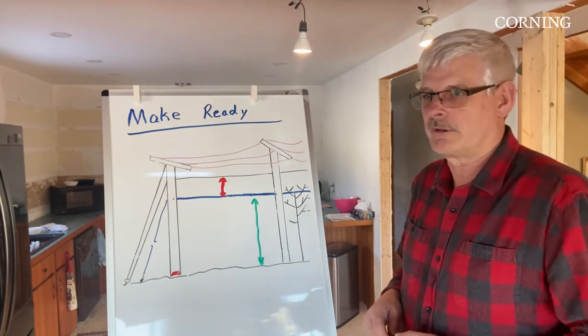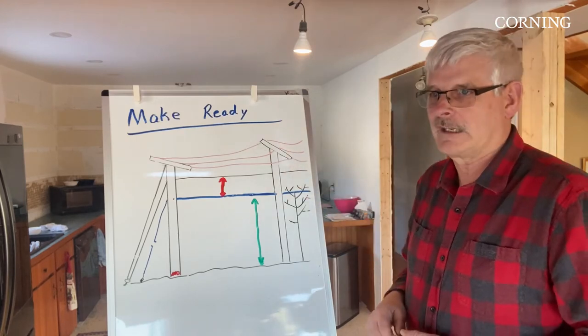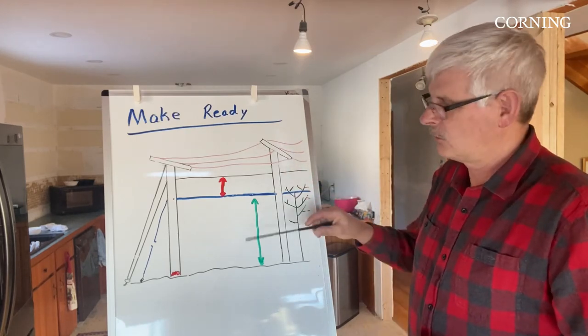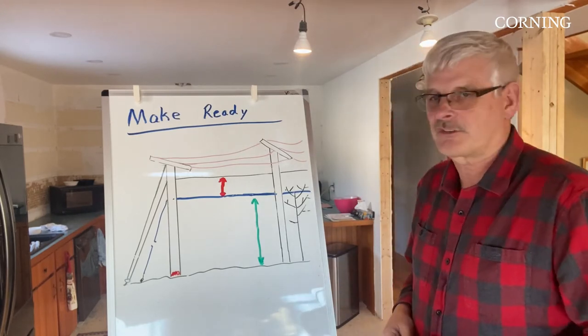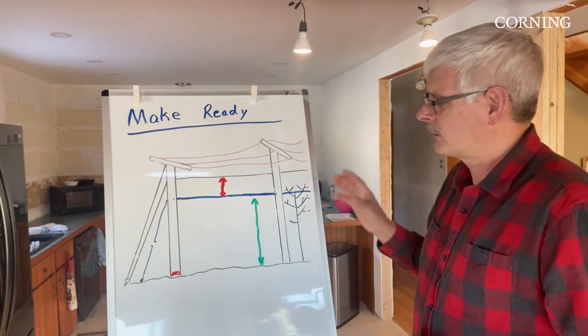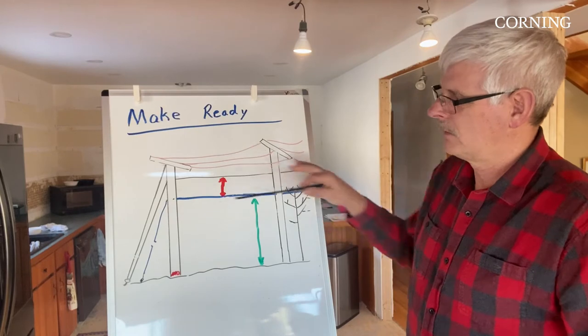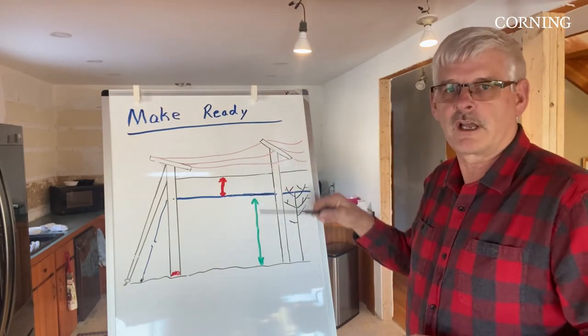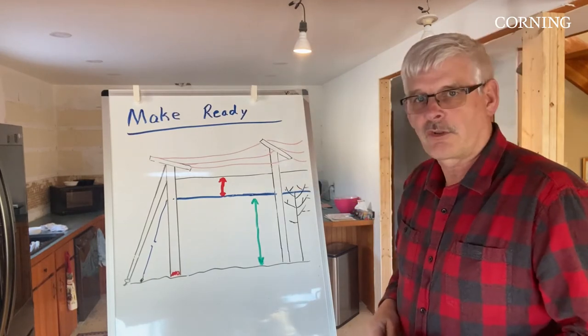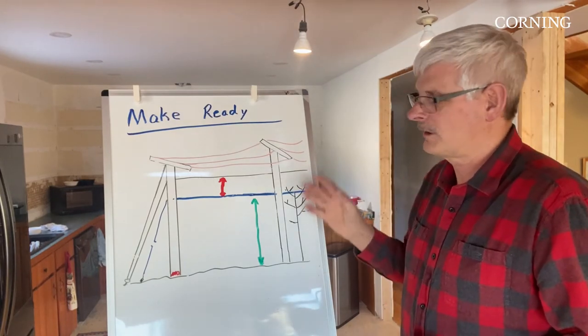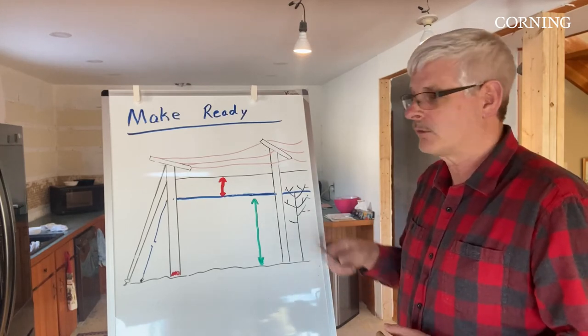They're trying to determine based on requirements whether the existing pole line can be made ready to accept a new attachment. Once they receive your application, they start looking at the overall pole line to determine if there's structurally the capability to support another attachment. They'll do pole assessments, determining the strength of the pole line to ensure it will support the additional load once this cable is placed.